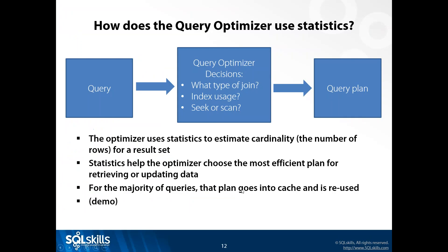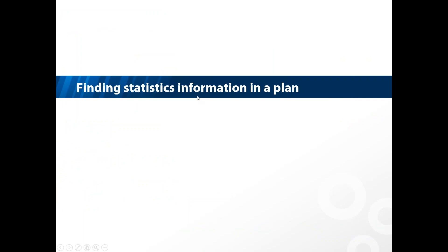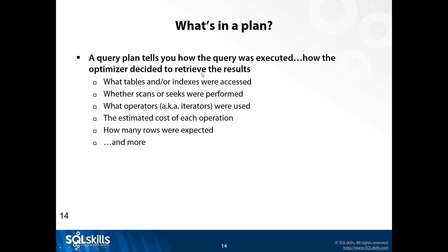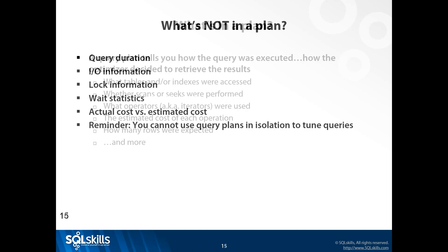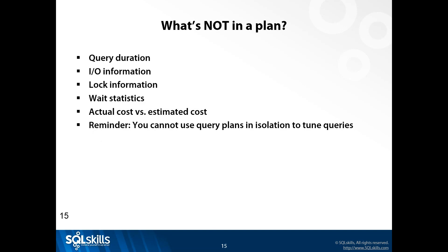Now let's talk about how we find the stats information in a plan. When we look at our plan, we can see what table it accessed and what index, whether it did a seek or a scan, what operators were used, and how much these cost and how many rows it expected. But there's a lot I don't get from the plan in isolation - I don't see how long it took, anything about IOs or locks or waits, or the actual cost. The cost in the plan is always estimated.